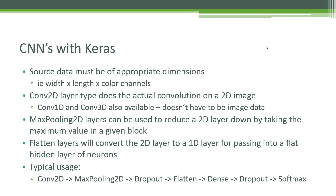Typical usage of image processing with a CNN looks like this: you might start with a Conv2D layer that does the actual convolution of your image data, follow that up with a MaxPooling2D layer to distill and shrink the data, then a dropout layer to prevent overfitting, then a Flatten layer to feed that data into a perceptron. A Dense layer in Keras is just a perceptron — a hidden layer of neurons. From there you might do another dropout pass to further prevent overfitting, and finally a softmax to choose the final classification that comes out of your neural network.